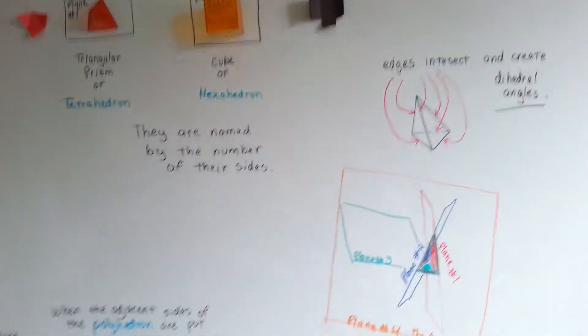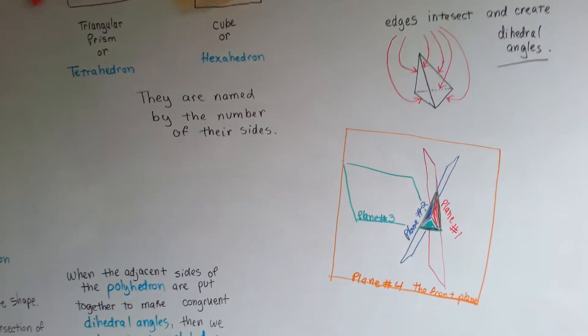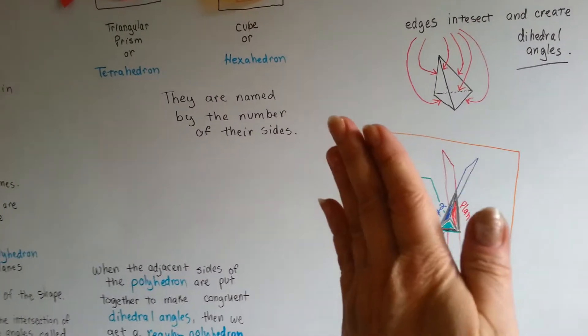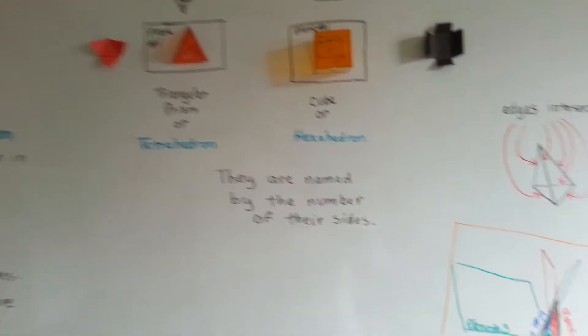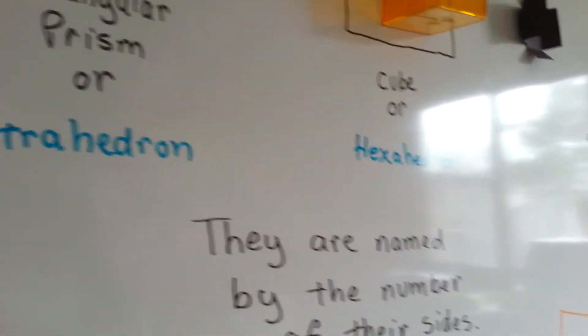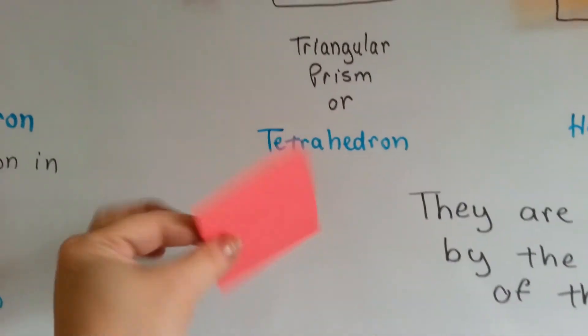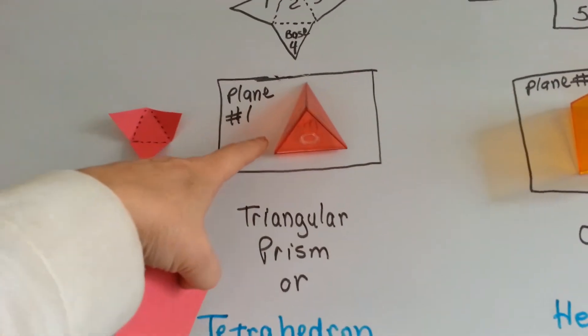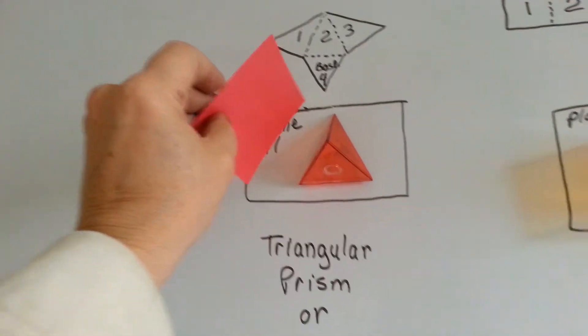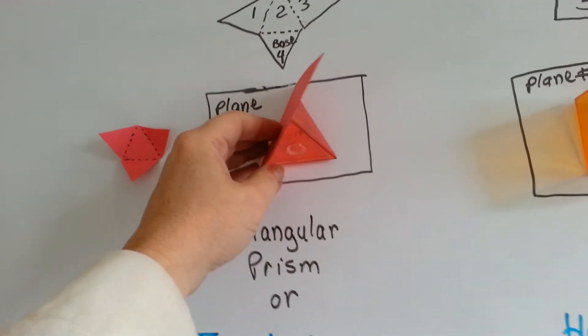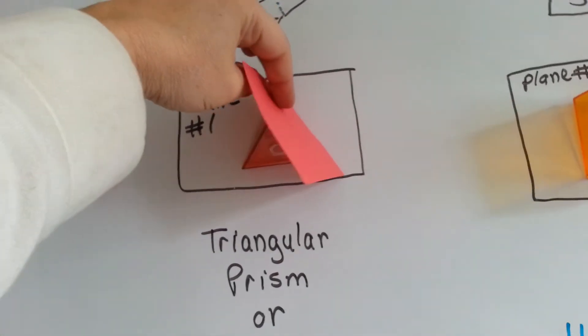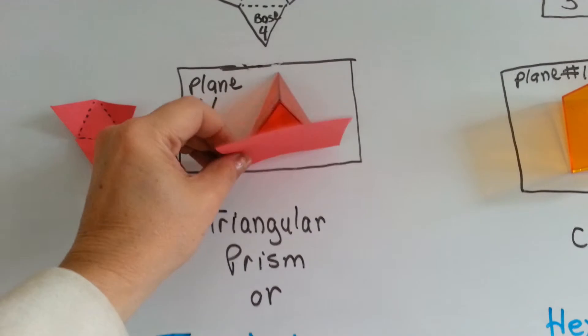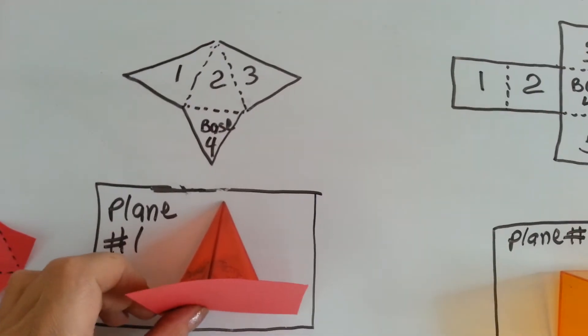So, maybe now you can understand my crazy drawing over here a little bit more about how all the planes are laying all around it. It's almost like this. What if I were to take this flat piece and say, the board is plane number one, then this part right here is plane number two, this is plane number three, and then the bottom would be plane number four.